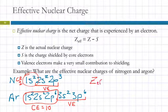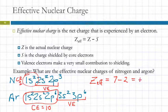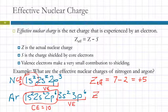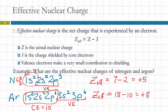To find the effective nuclear charge for nitrogen: nitrogen's atomic number is 7, and we subtract the number of core electrons — 2 — so it has an effective nuclear charge of +5. Argon's atomic number is 18, and we subtract the 10 core electrons, giving it an effective nuclear charge of +8. A higher effective nuclear charge causes the electrons to be pulled in.